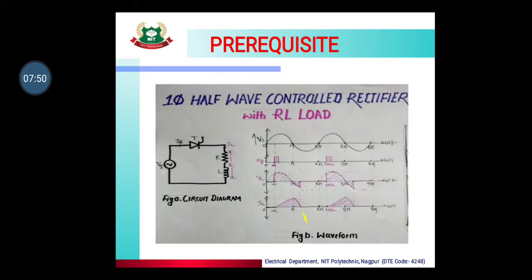Until the inductor's current reaches zero, the energy is not fully released. The only path for the inductor to release energy is through the thyristor, so the SCR is forcibly kept on. Meanwhile, after pi, the negative half cycle arrives and the SCR receives reverse bias — but as long as the inductor current has not become zero, the SCR stays on. Because of this, the negative supply voltage also appears across the load.